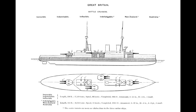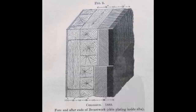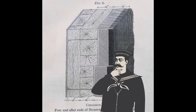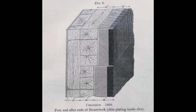As soon as machinery efficiency improved enough to achieve desired speed without occupying vast centerline space with boilers and engines, everyone reverted to all-centerline armament. The en-echelon revival in the dreadnought era lasted only about half a decade.